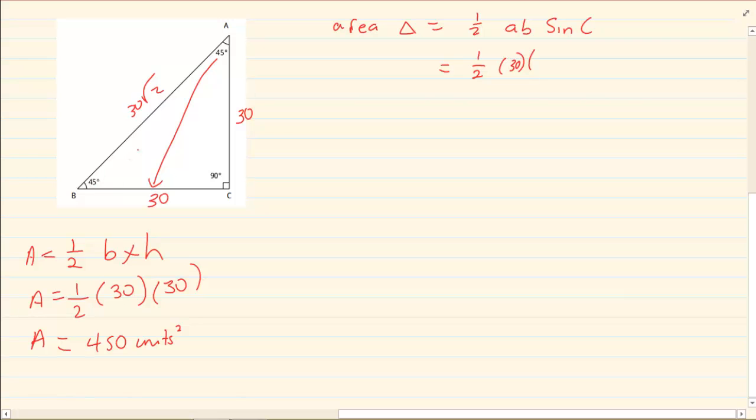And then my b is also 30 times sin 90, because my angle c is 90. Now if you press that in the calculator you will get 450 units squared.